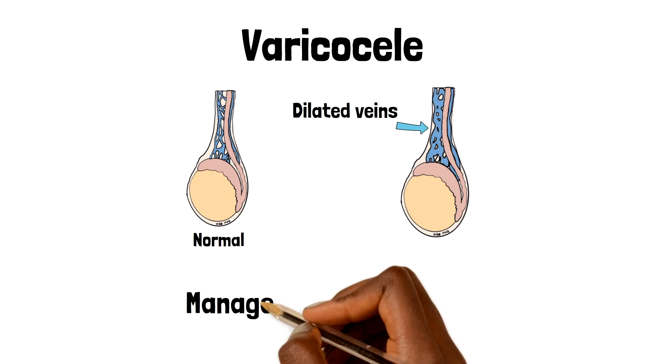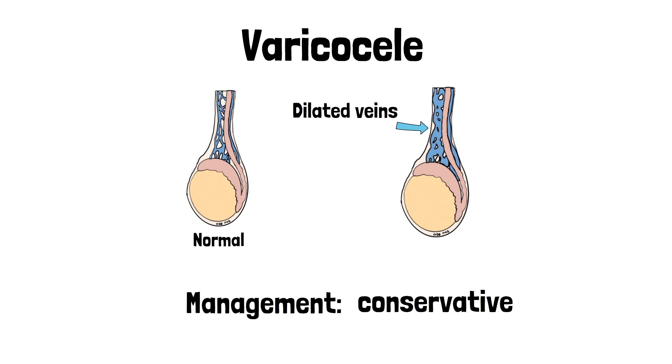Varicoceles are usually managed conservatively unless there are concerns about fertility. 90% of varicoceles occur on the left-hand side, due to a difference in drainage between the left and right spermatic veins. Varicoceles can also be a rare presenting feature of a renal cell carcinoma.